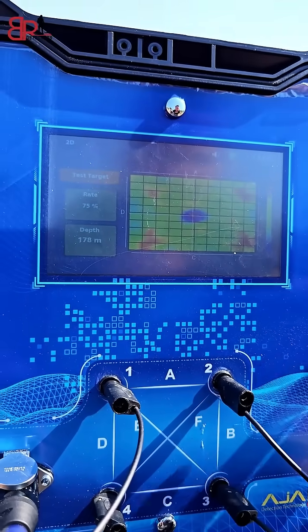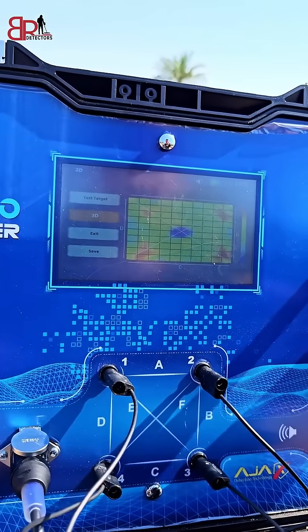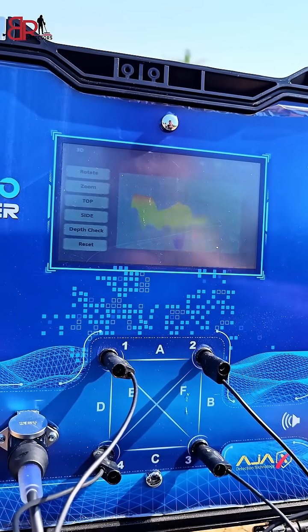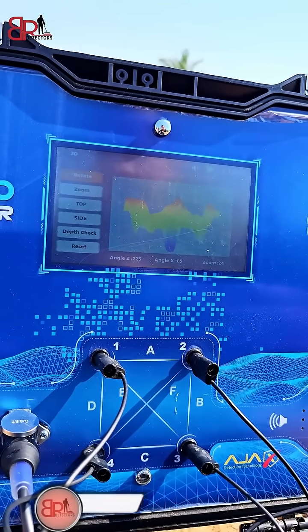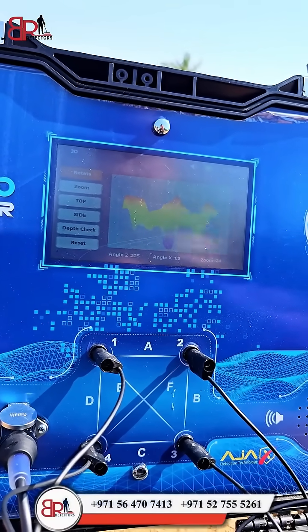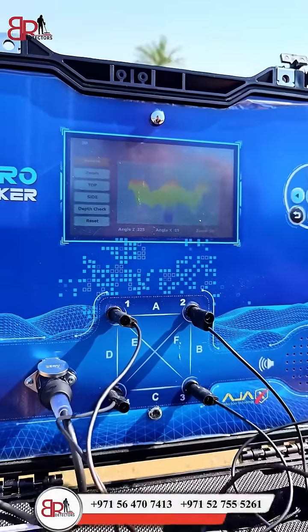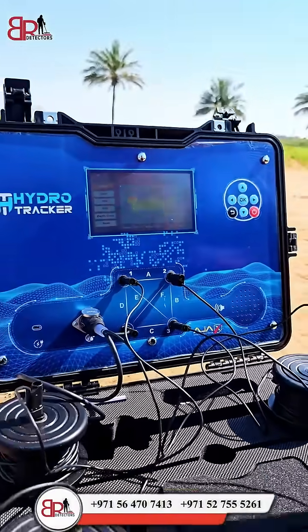Now we can also see the image itself by 3D projection. We have options to rotate the image, zoom the image, see it from top perspective, the side perspective, and depth checking.